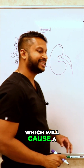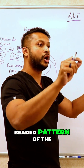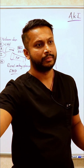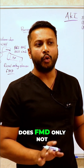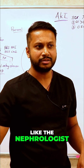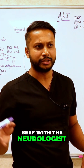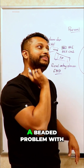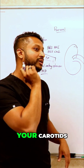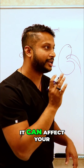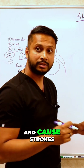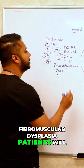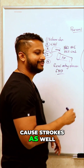Fibromuscular dysplasia will cause a beaded pattern of the blood vessel. And it doesn't only affect the nephrologist's territory — it also has issues with the neurologist's side too. It would cause a beaded pattern in your carotid arteries as well, causing strokes. So fibromuscular dysplasia patients can present with strokes as well as AKI.